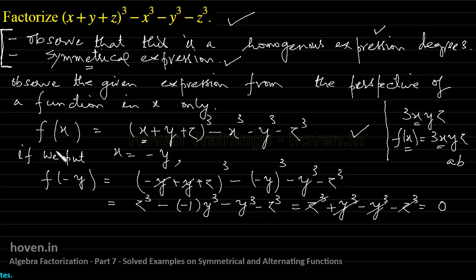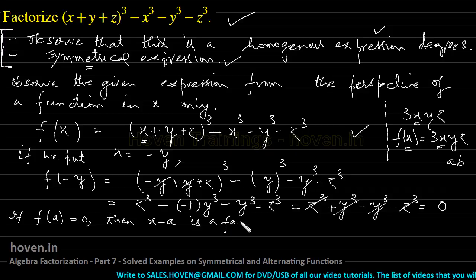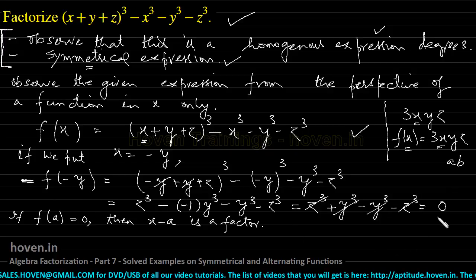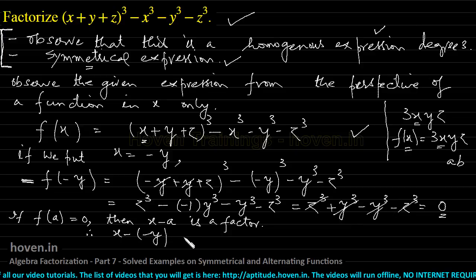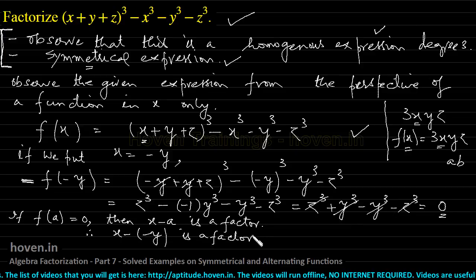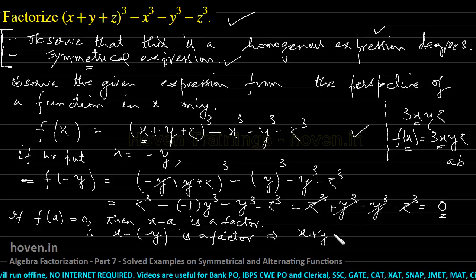This means that this function has a value of 0 at x = −y. So by the factor theorem — if f(a) = 0, then (x − a) is a factor — we see that f(−y) = 0. Therefore x − (−y) is a factor, which implies x + y is a factor.